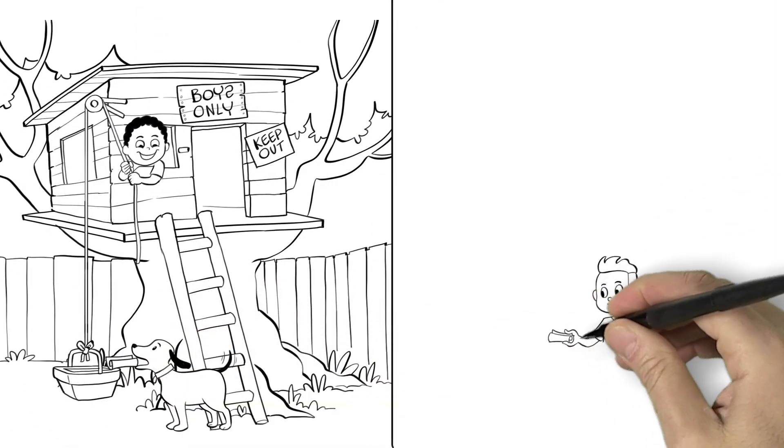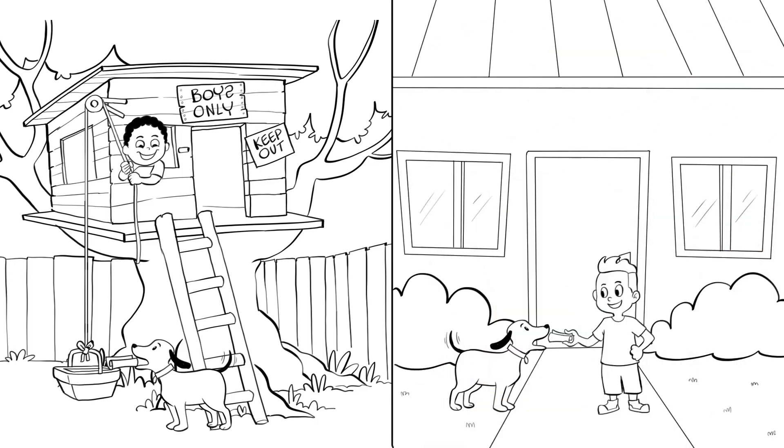Each week, they carefully sent encoded messages back and forth to plan their secret club meetings.